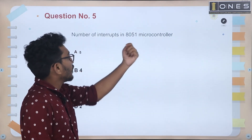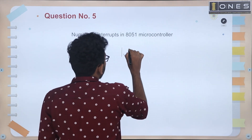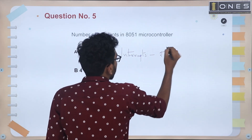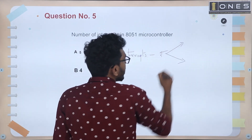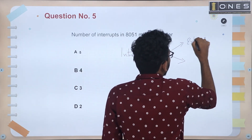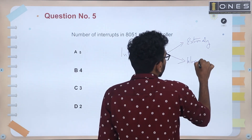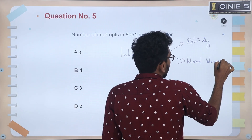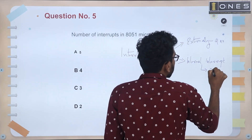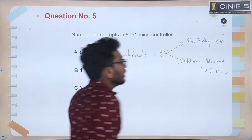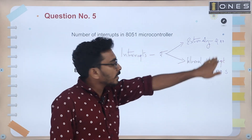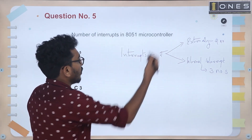Next question: the number of interrupts in the 8051 microcontroller. There are 5 interrupts — 2 external interrupts and 3 internal interrupts. The 8051 microcontroller has 2 external interrupts and 3 internal interrupts.